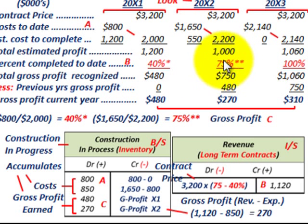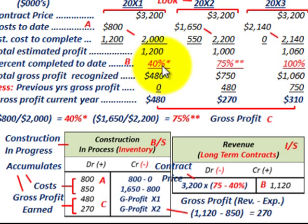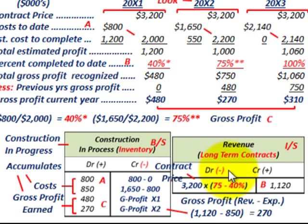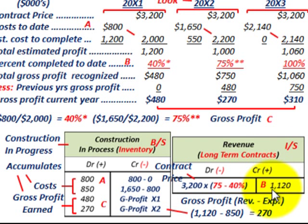For revenue in 20x2: the percent completed was 75%, but we already recognized 40% in 20x1. So we take the difference — 75% minus 40% equals 35% — times the $3,200,000 contract price. That gives us revenue credited on our income statement of $1,120,000 for year 20x2.